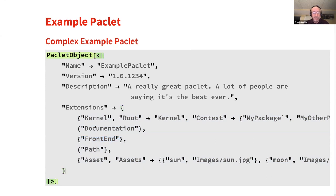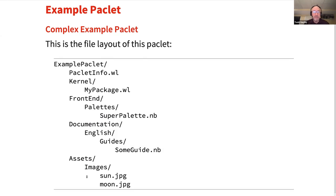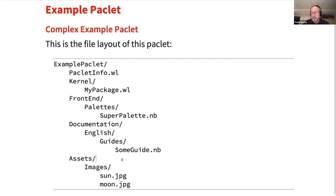This PACLIT provides various resources, and I actually have this PACLIT on my machine. This is the file layout: there's the PACLIT info file at the top level, a kernel directory, the front-end directory with the standard substructure with a super palette in there, the documentation directory with a single guide page, and an assets directory with arbitrary files I can look up by name. This directory is essentially the layout I would have had for a standard application. It's not like I had to build something very special — I have a pretty standard layout, throw in a PACLIT info file, and the PACLIT manager can deal with it.